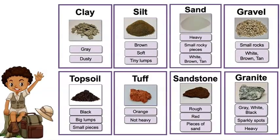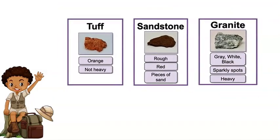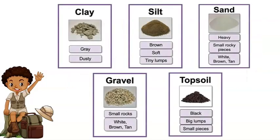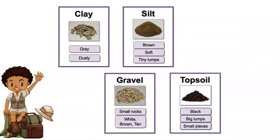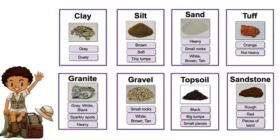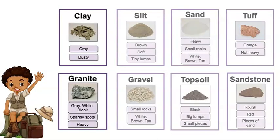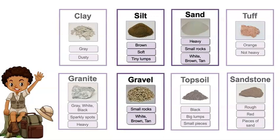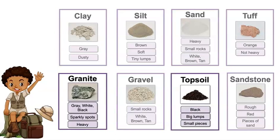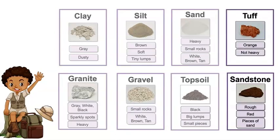You did great work observing the properties of these common land samples. Some samples were bigger rocks, while some samples were made of really small pieces. We also saw that some were gray, and some were brown, some were white, two were black, and some were a red or orange color.